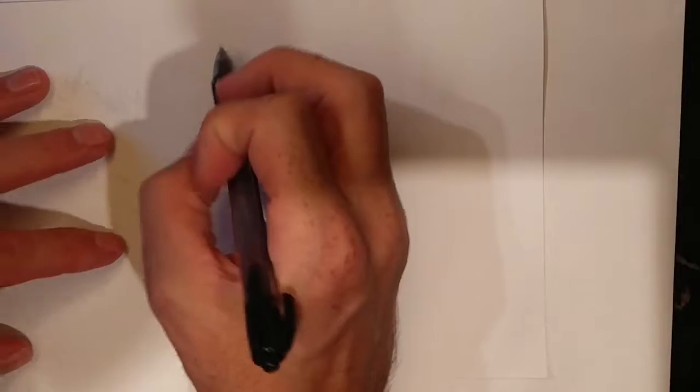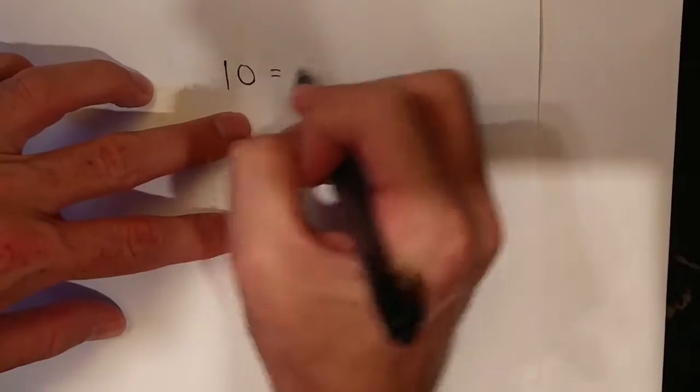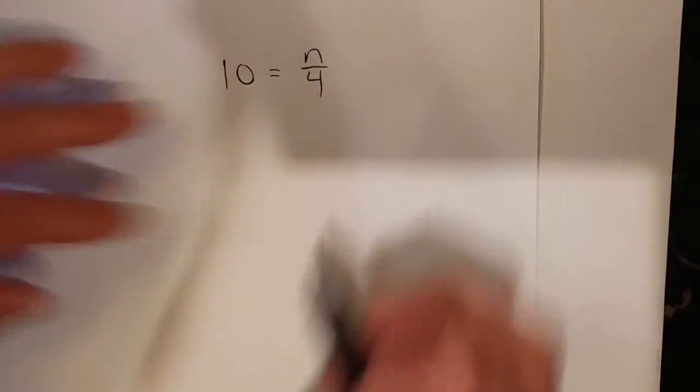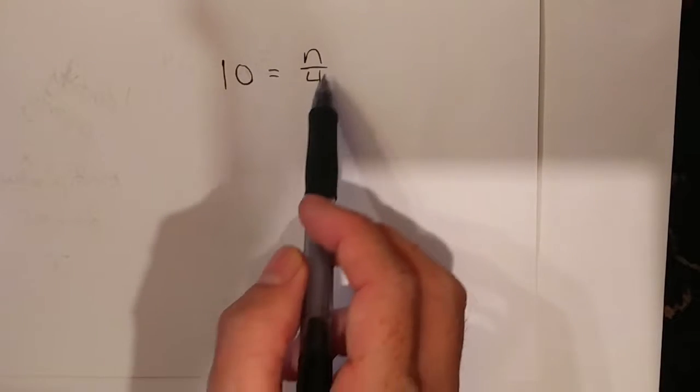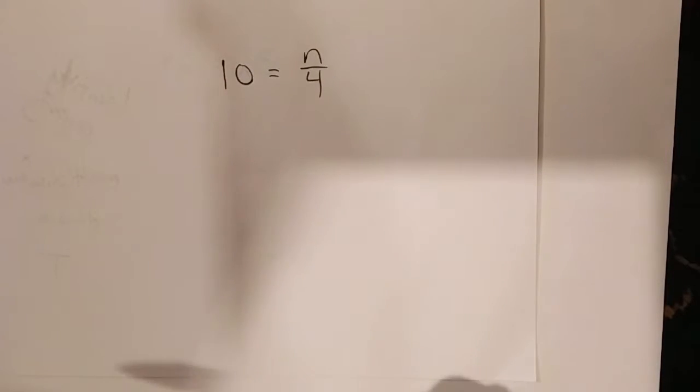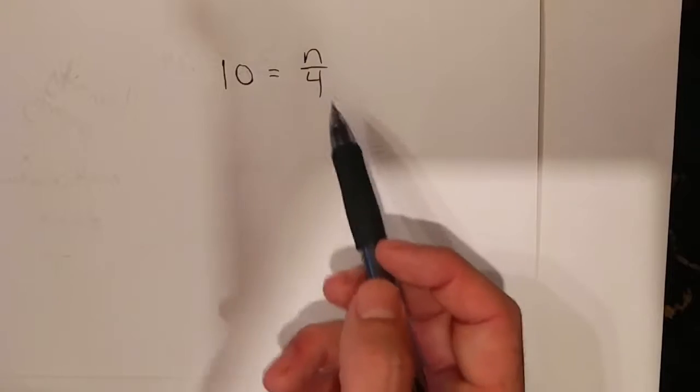Just like in class, we had an example that said that 10 is equal to n over 4. Now what's important is going back to what does this n over 4 actually mean. A lot of you may think okay well it's n split up into 4, yeah that's pretty true.